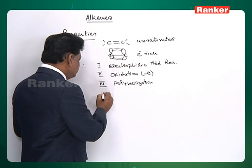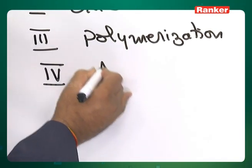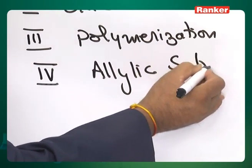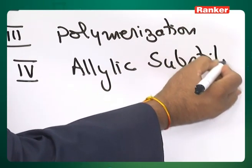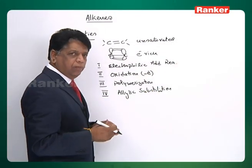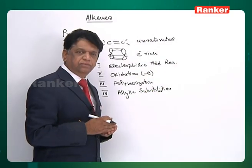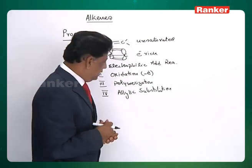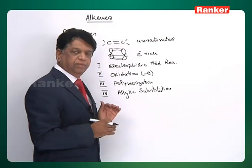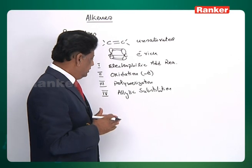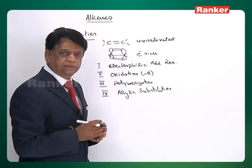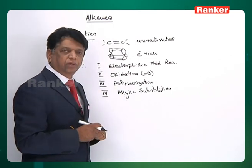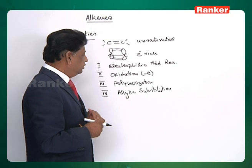Alkenes also undergo one special reaction called allylic substitution. Allylic means the carbon next to the double bond. The carbon making the double bond is called vinylic; the next carbon is called allylic. The hydrogens on that carbon show hyperconjugation and are reactive, so they undergo substitution. All such reactions come under this fourth type.